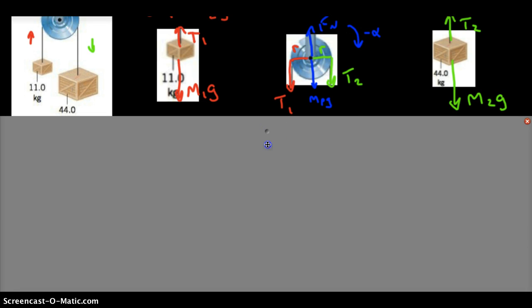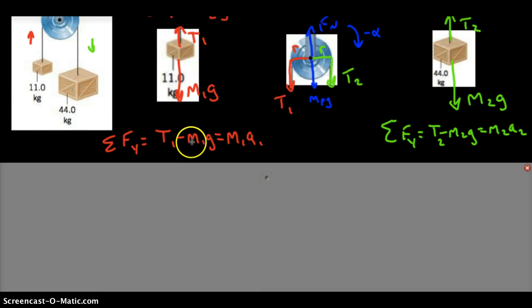First thing we'll do is the easiest ones. Let's go ahead and write our Newton's second law equation. So we would have just T1 minus M1g equals M1a and T2 minus M2g equals M2a2. No surprise there. We've done that kind of a thing before.